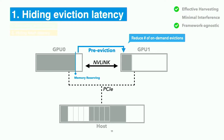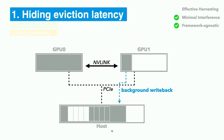MemHarvester hides eviction latency with pre-eviction for effective harvesting. On-demand eviction increases page fault latency, so it is important to reduce on-demand evictions. MemHarvester reserves a certain amount of free memory and pre-evicts pages to harvested memory using the abundant NVLink bandwidth. This pre-eviction scheme is implemented at the driver level, making the technique framework agnostic without requiring application modifications. Once eviction to harvested memory is completed, we make a copy of the evicted page to host memory to minimize interference.